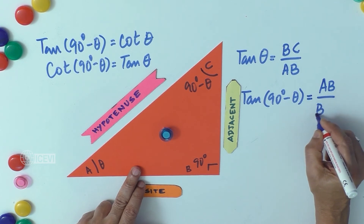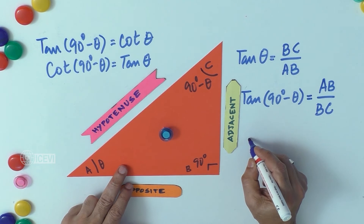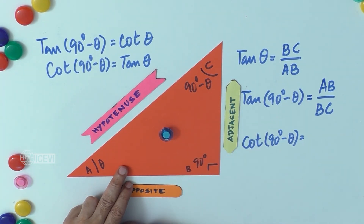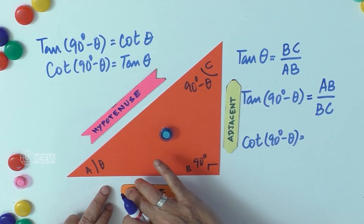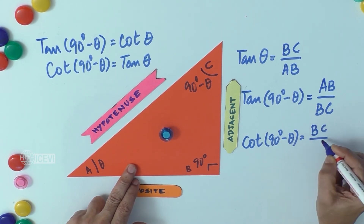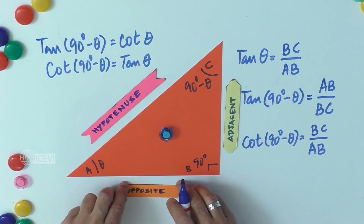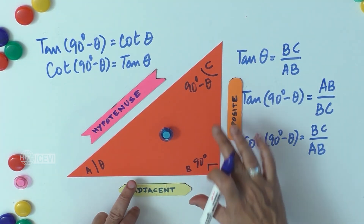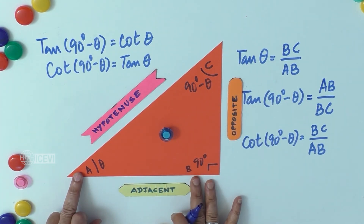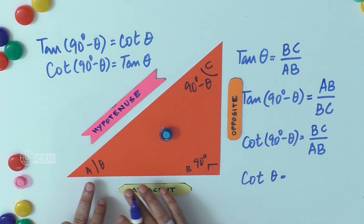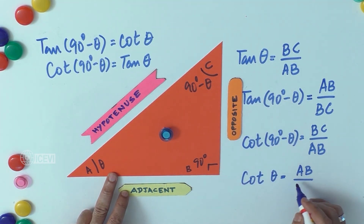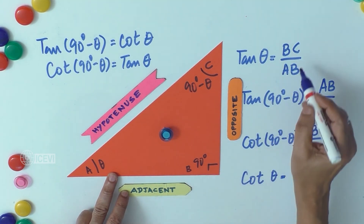So tan(90° − θ) = AB divided by BC. Now for cot(90° − θ): cotangent is adjacent by opposite, so it equals BC divided by AB. For cot θ, taking θ as the reference angle, BC is the opposite and AB is the adjacent, so cot θ = AB divided by BC.